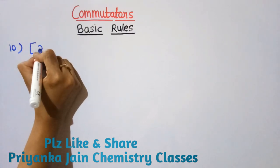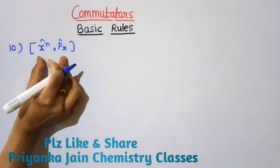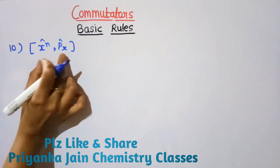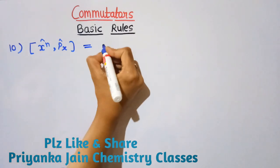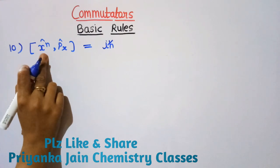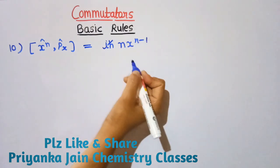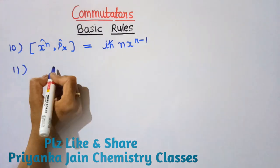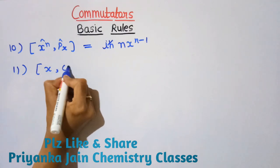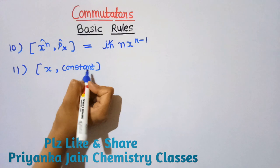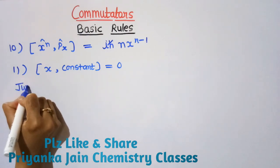Rule 10: For [x^n, px], use [x, px] = iℏ and multiply by the derivative of x^n: the result is iℏ × nx^(n−1). Another rule: the commutator of any operator with a constant is always equal to zero.